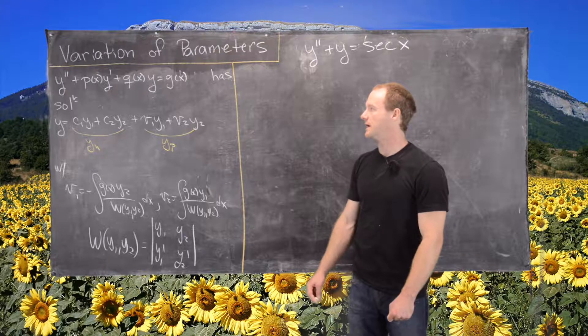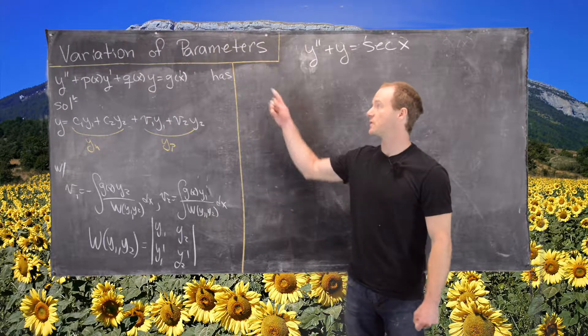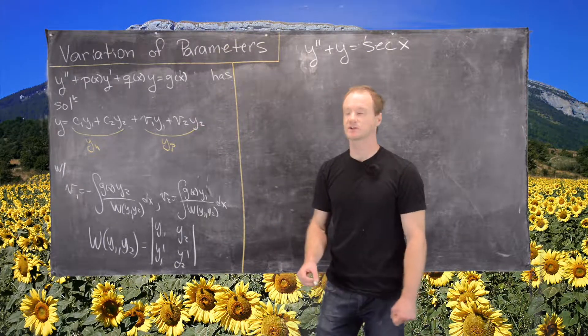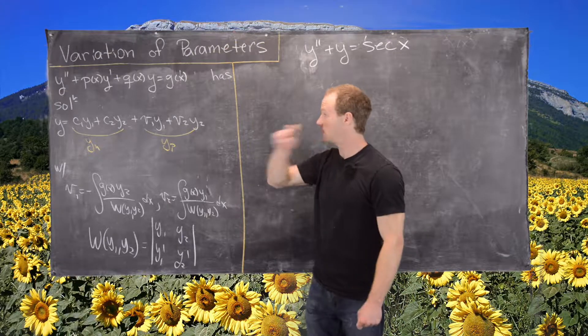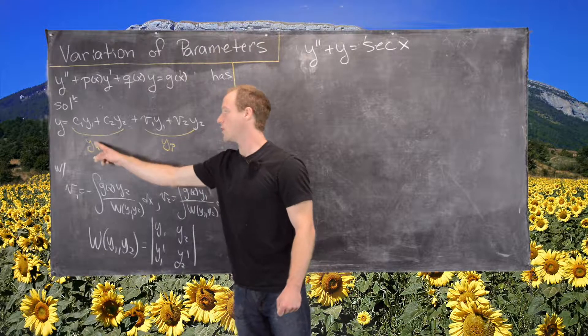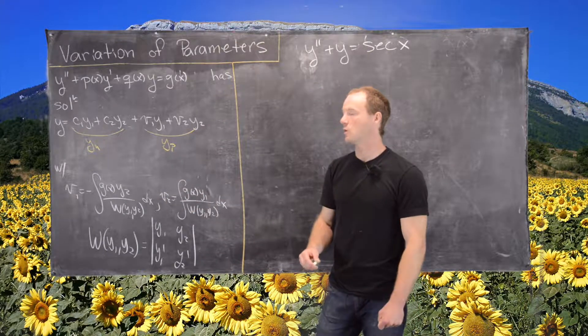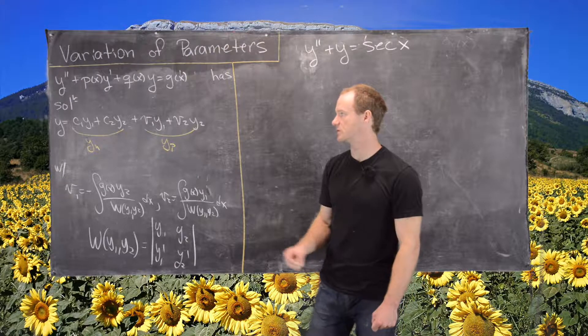So let's recall the summary of a solution for such a problem. If we have a differential equation given as follows, y double prime plus p of x y prime plus q of x y equals g of x, we have a solution y equals c1 y1 plus c2 y2. So that's the homogeneous part of the solution. I should say that y1 and y2 are linearly independent solutions of the corresponding homogeneous equation.